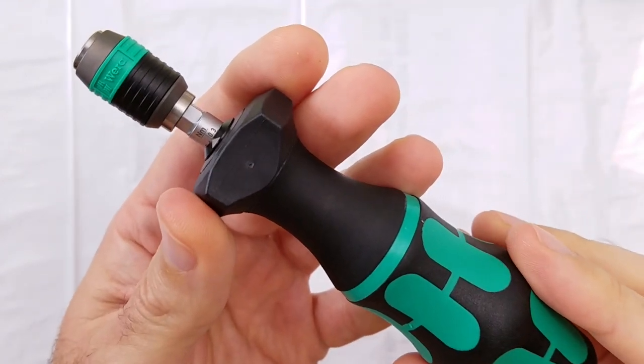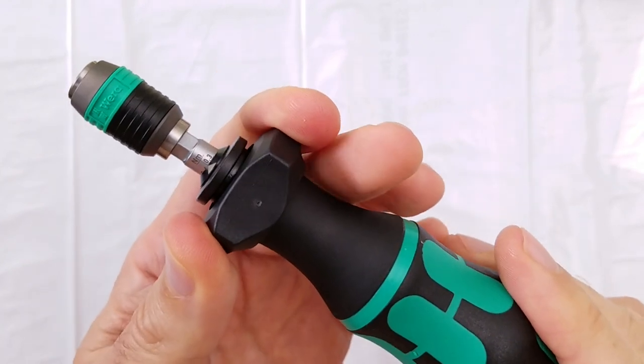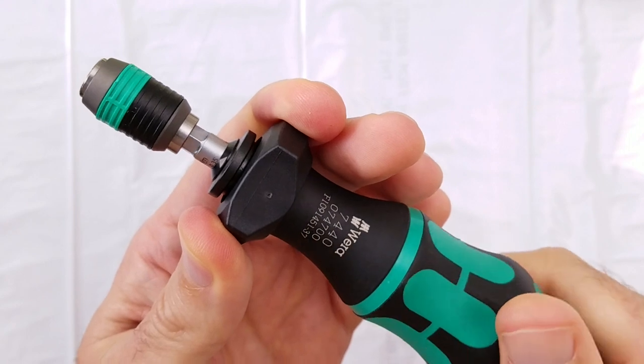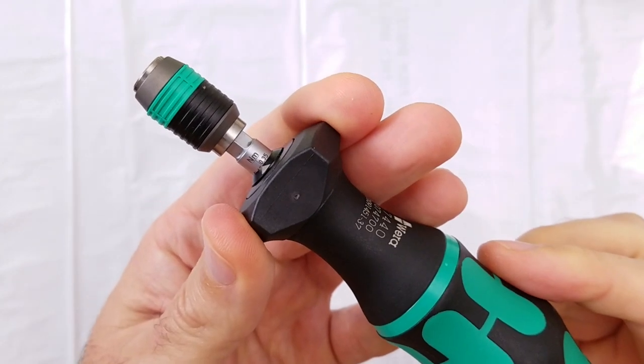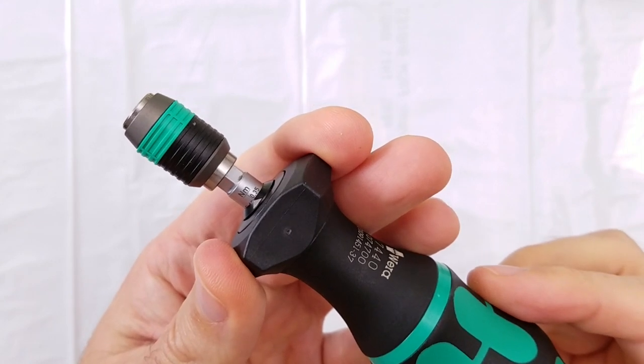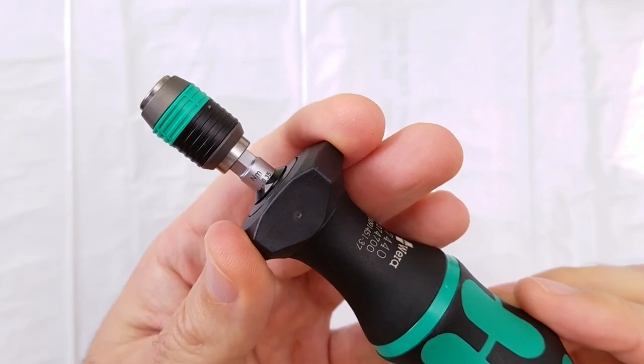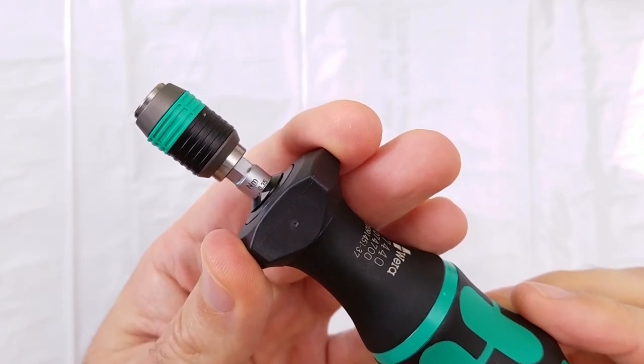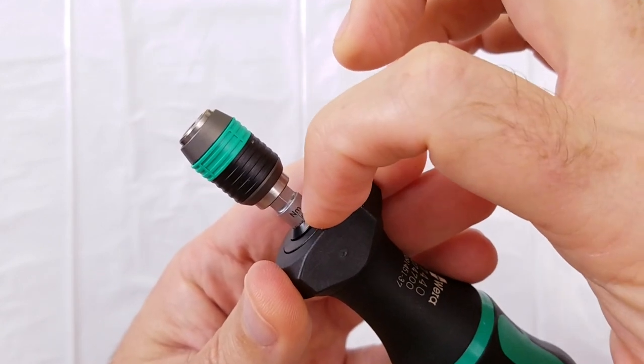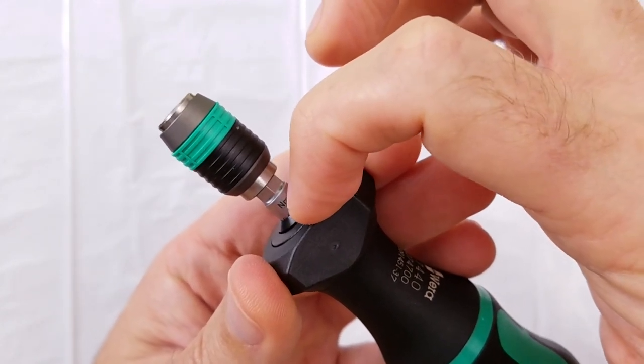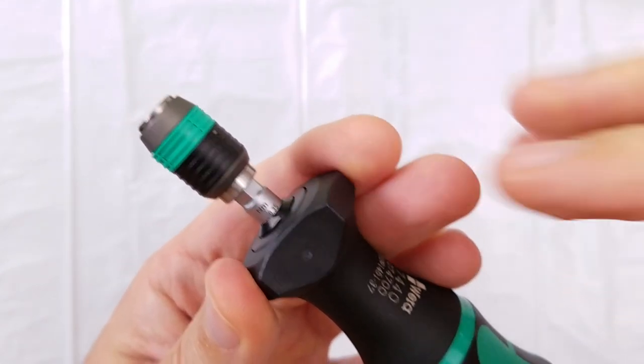Right now, it's set at 0.3 Nm. If you pull the collar back and then rotate clockwise 180 degrees, it's now set at 0.35 Nm. The numerical markings on this scale are above the line for the marking. You set the forward most portion of the black plastic on the line with the number part above it.